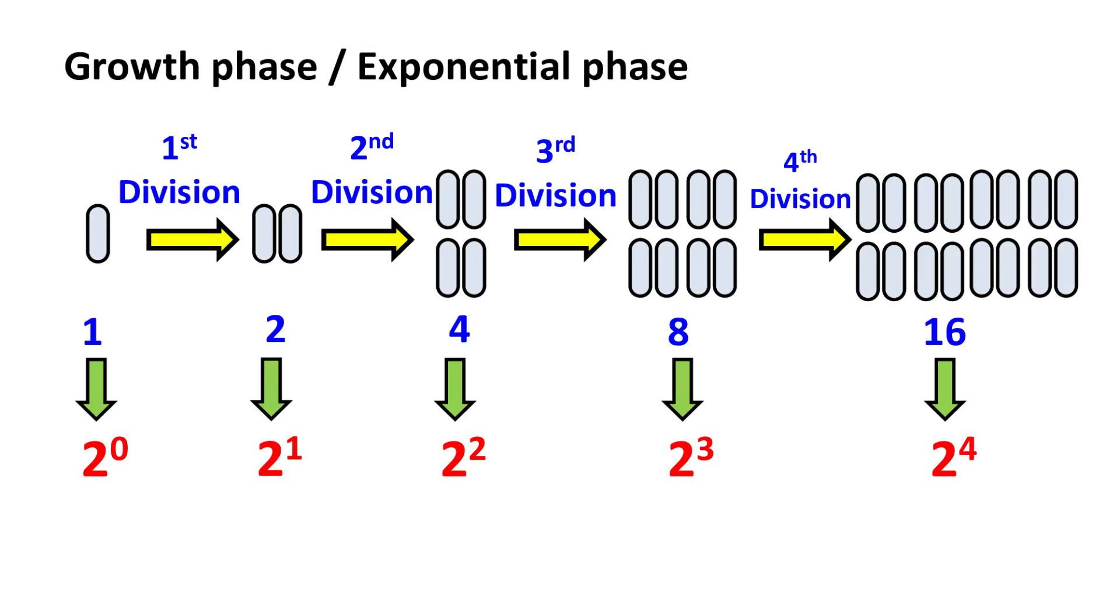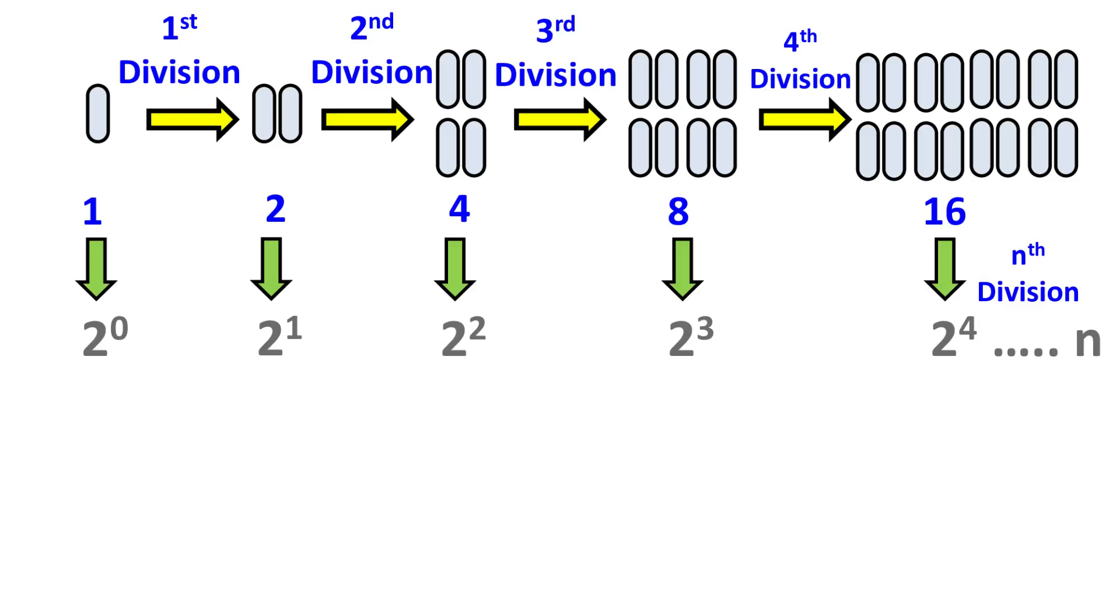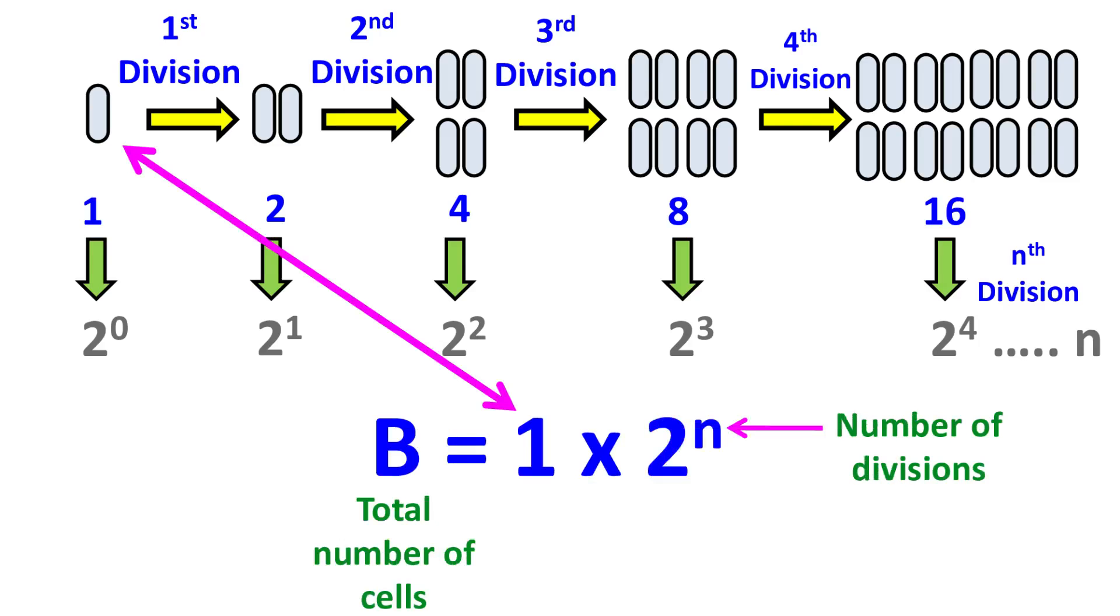This can continue till n number of cell division. Hence, total number of cells can be written as B equals two raised to n, where n is the number of cell division. Now this equation holds true when there was one cell initially and it divided n number of times.